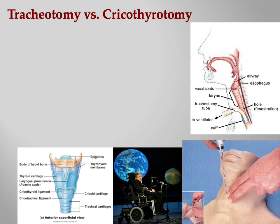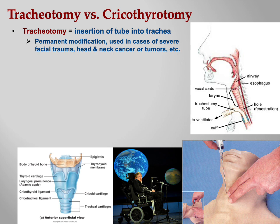A tracheotomy is insertion of a tube into the trachea — a more permanent modification used in cases of severe facial trauma, head and neck cancer, or tumors. The tube must be kept clean and clear because mucus builds up; respiratory therapists suction it frequently because if it gets clogged, that person cannot breathe. The air also must be humidified, since the nasal cavity is no longer warming and humidifying incoming air.